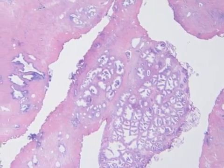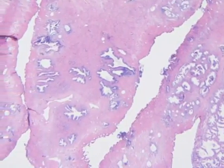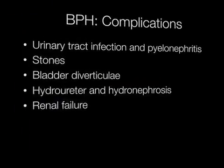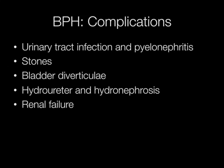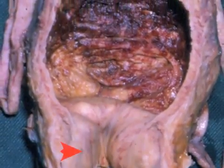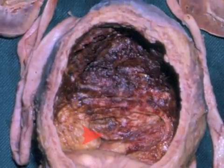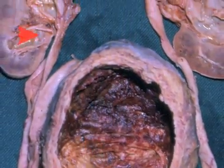This is the histological appearance of prostate chips resected from a TURP procedure. Complications of BPH include urinary tract infection and pyelonephritis, stones, bladder diverticulae, hydroureter and hydronephrosis, and in severe cases, renal failure. This image shows a severely hypertrophied prostate causing enlargement and dilatation of the bladder, hydroureter and hydronephrosis.